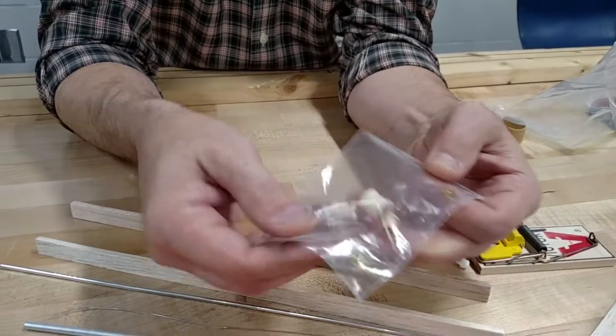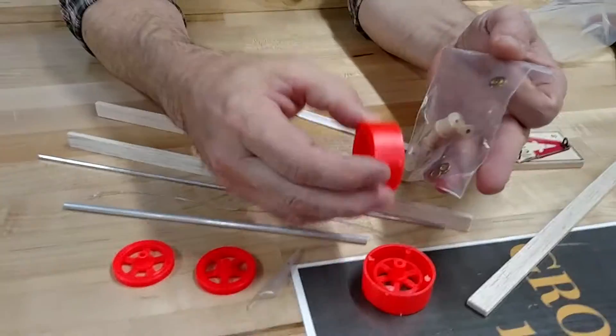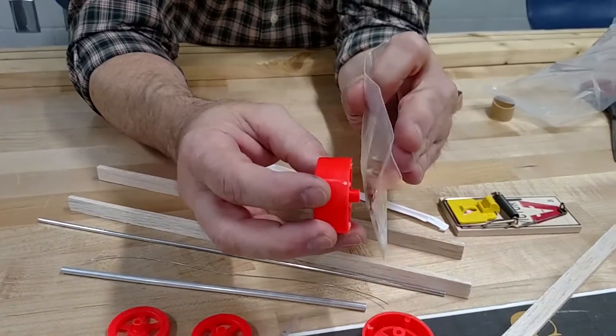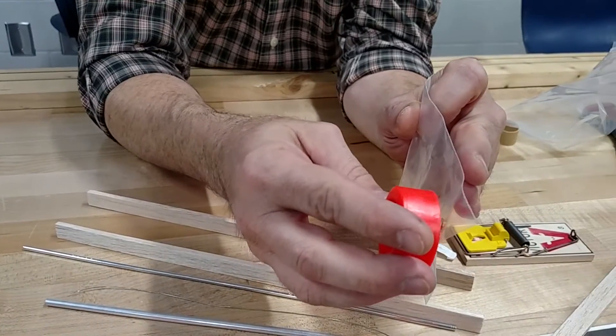Then you have a few little washers in here. And these washers are going to go on the inside in between your wheel and your straw so it doesn't bind up.